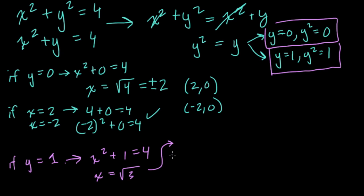And we want to plug these in to see how that works out. So plugging it in, we get the square root of 3 squared plus 1. Does that equal 4? Sure, because the square root of 3 squared is just 3. Plus 1 is 4.